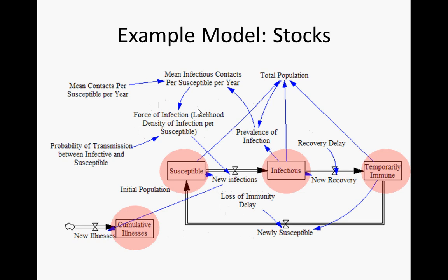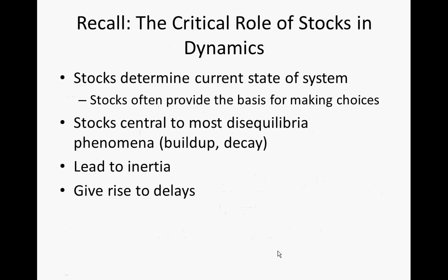In a stock and flow diagram, stocks are shown as rectangles. We can have stocks representing very different sorts of things. On the right, we have three stocks representing decompositions of the population into different categories. Over here, cumulative illnesses counts up the number of illnesses. We might have a further stock for the accumulated amount of money spent by the healthcare system in administering treatment, providing vaccinations, or undertaking intervention. So we can have stocks holding different quantities with units consistent with that.